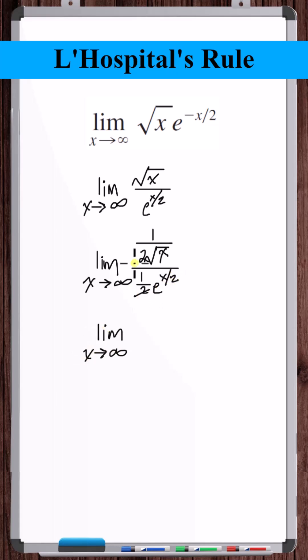Simplifying, plugging in infinity, e to the x over 2 goes to infinity. Square root of x goes to infinity, so this limit goes to 1 over infinity, which is 0. So this limit is equal to 0.